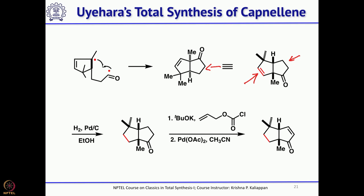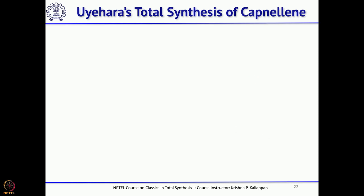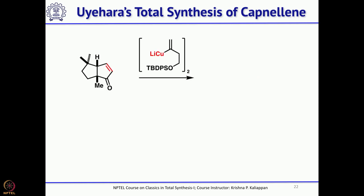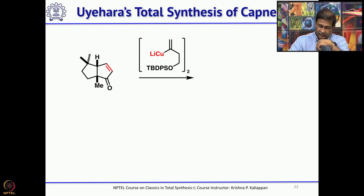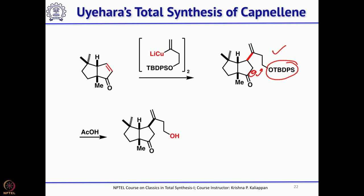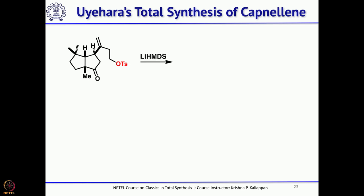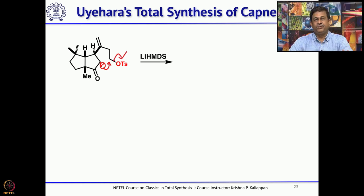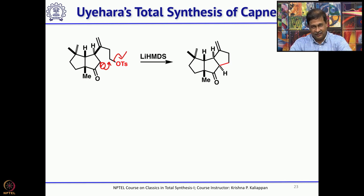Once the double bond is in place, the 4-carbon unit is added in a 1,4-fashion using the enolate, giving the desired product. Next, the TBDPS group is removed using acetic acid to give the alcohol, which is then converted to a tosylate — a good leaving group. Treatment with lithium hexamethyldisilazide generates the anion, which intramolecularly attacks the carbon bearing the tosylate in an SN2 fashion, introducing the third ring.